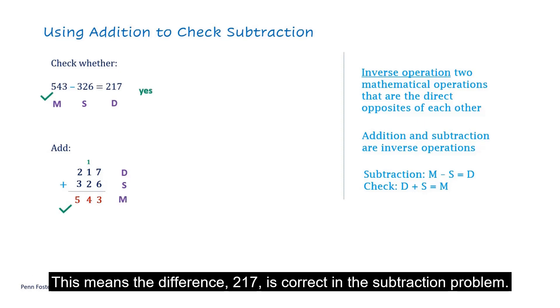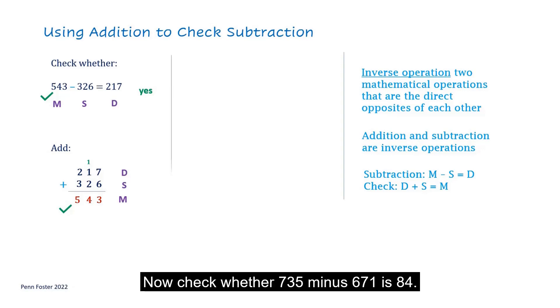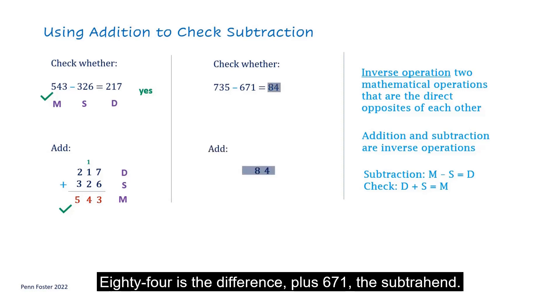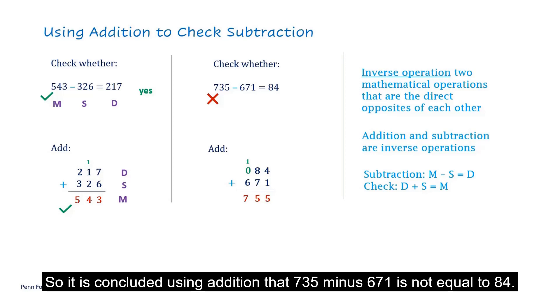This means the difference 217 is correct in the subtraction problem. Now check whether 735 minus 671 is 64. 64 is the difference plus 671, the subtrahend. Use a 0 as a placeholder as before and add. The result is 755. This is not the minuend, which was 735. So it is concluded using addition that 735 minus 671 is not equal to 64.